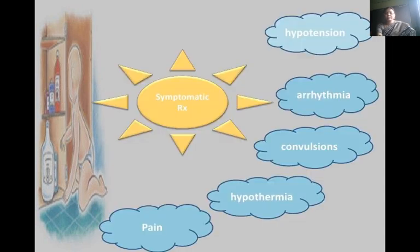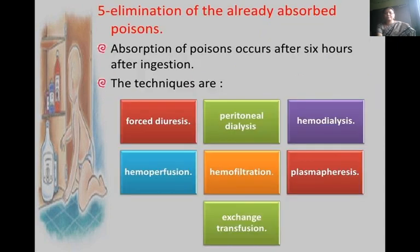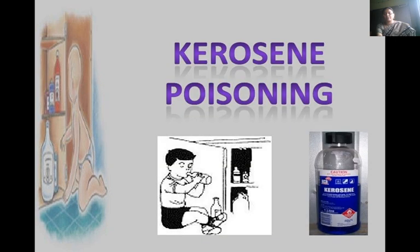Symptomatic treatment is given for hypotension, arrhythmia, convulsions, hypothermia, and pain. For elimination of already absorbed poisons — absorption occurs after 6 hours of ingestion — the techniques include forced diuresis, peritoneal dialysis, hemodialysis, hemoperfusion, hemofiltration, plasmapheresis, and exchange transfusion.